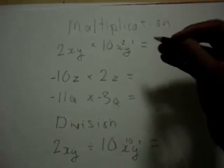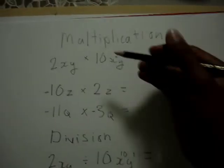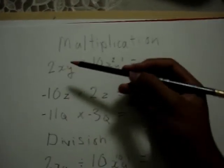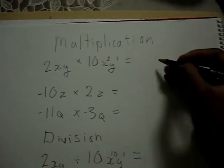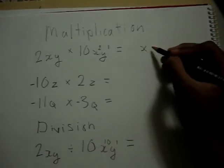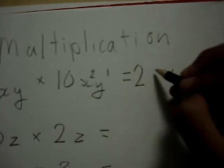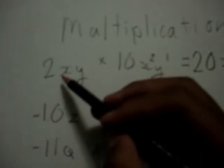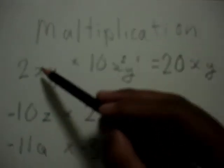So the multiplication is very simple. It's just unlike and like terms. If it's like terms, then you copy it here. 2 times 10 is 20, and you must add the terms, so this is